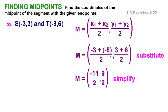I've got negative 11 halves and 9 halves. I could leave it in that form, or I could show it this way: negative 5 and a half, 4 and a half, and that would be the coordinates of M.